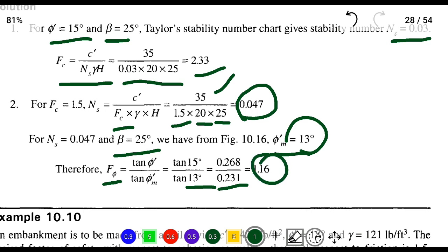So for the second question, when the factor of safety for cohesion is 1.5, the factor of safety with respect to friction is 1.16. This is the method to solve the problem. We will see the next video, thank you.